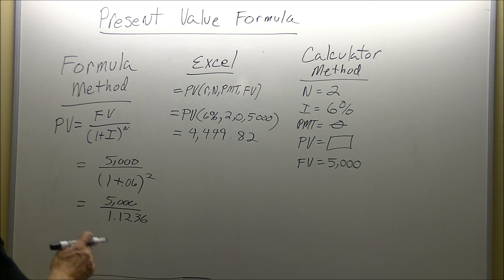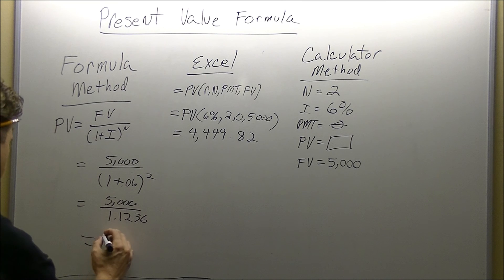The final step is to take our $5,000 and divide it by the 1.1236. That will give us, again, $4,449.82.